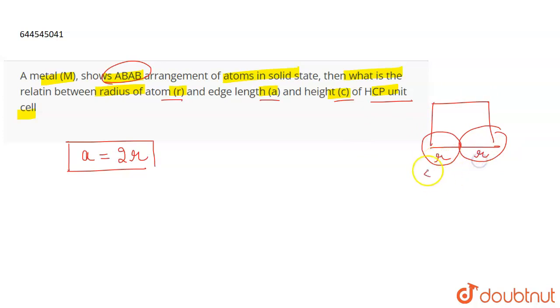So this is the radius R, this is R and this is the edge length A. So we get this relationship as A is equal to 2R.